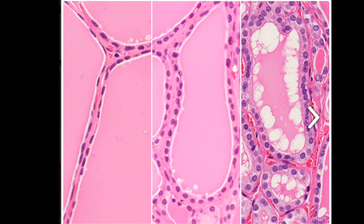This picture shows the simple squamous epithelium of hypoactive thyroid follicles, the simple cuboidal epithelium of metabolically active thyroid follicles, and the centrally located colloid, which contains thyroglobulin.